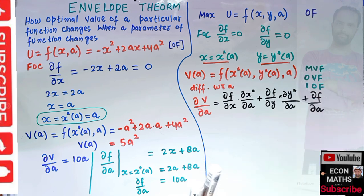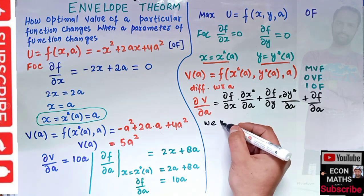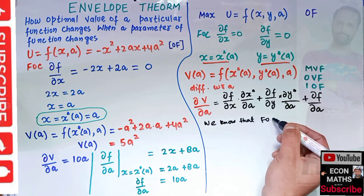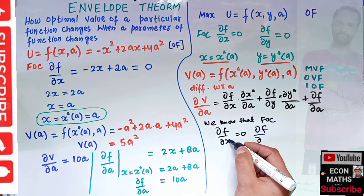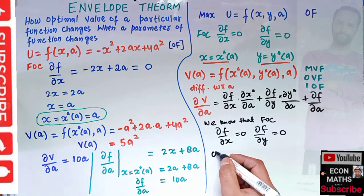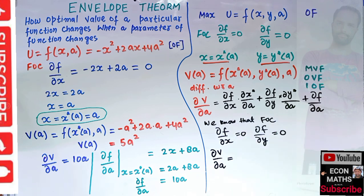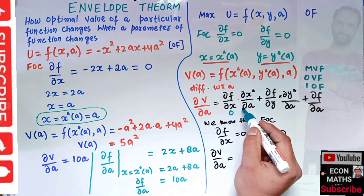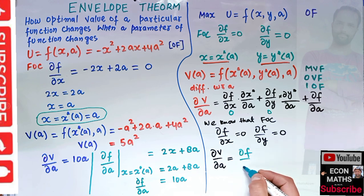From the first order conditions we know that ∂f/∂x equals zero and ∂f/∂y equals zero. Therefore the first two terms vanish — zero times anything is zero — and we are simply left with dV/da equals ∂f/∂a.